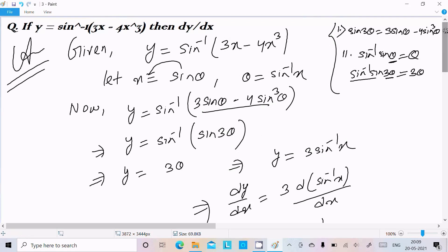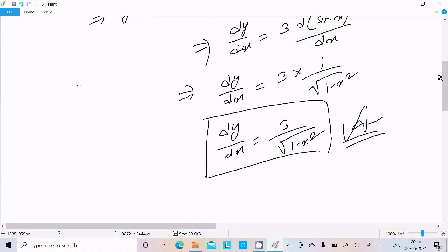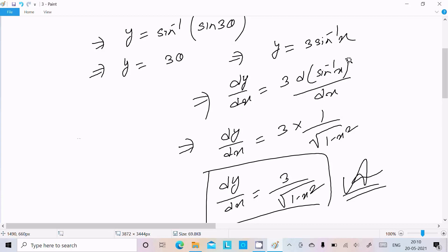This is the simplest way to solve this problem. Assume x = sin θ, then use the sin 3θ formula. After solving, you get the result 3 divided by root 1 minus x squared. This is the sin inverse x formula: 1 by root under 1 minus x squared.